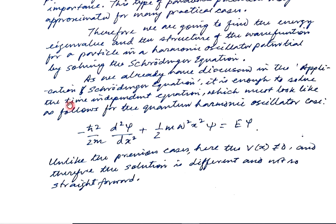Here we have taken the time-independent Schrödinger equation for simplicity, and that is enough to serve our purpose. We have inserted the parabolic potential function into this Schrödinger equation. One important difference from the previous cases is that here we cannot set V(x) = 0 — the potential is not zero. Therefore, as already mentioned, the solution is not straightforward.